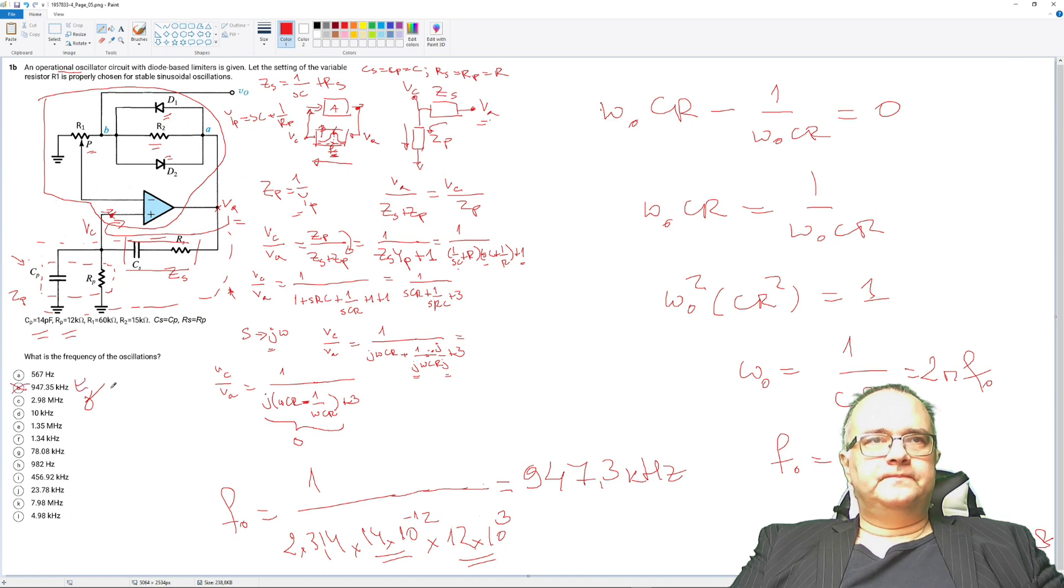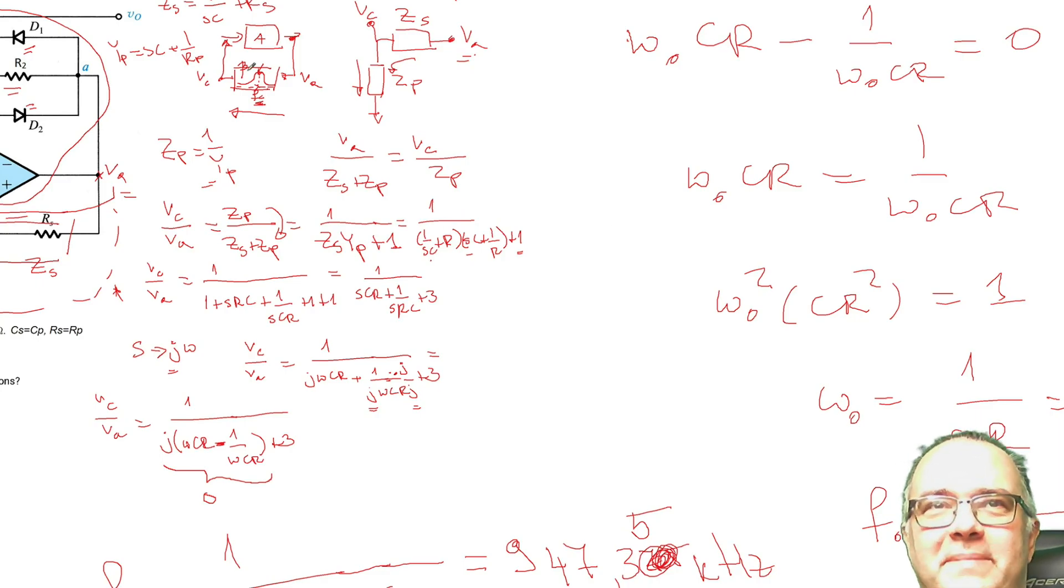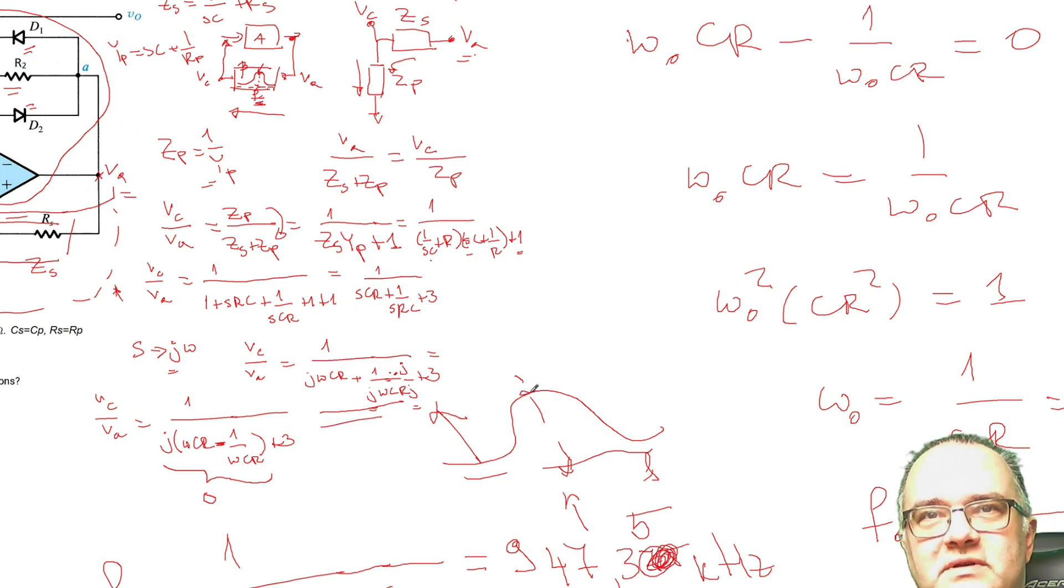So the correct answer is this one. So at this frequency, then the bandpass filter here will have a transfer. So at this frequency, the transfer of the bandpass filter will be real because the imaginary part, which was calculated here, will be equal to 0. So the transfer will be simply one-third, only at this frequency. At all other frequencies, we will have an imaginary part, which means phase rotation. And if you have phase rotation, the input of this amplifier and its output will not be in sync. So Barkhausen criteria will not be satisfied, there will be no oscillation. So thank you very much for your attention.